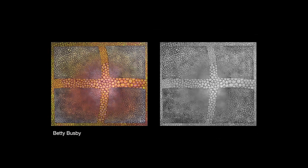Here's a masterful piece by Betty Busby. You really get a sense of how she created that glow in the center of the quilt on the left when you look at the gray version of it, because you can see there's a lot of lightness around the center — a lot of value contrast — and that is what's making the glow happen in the colored version.